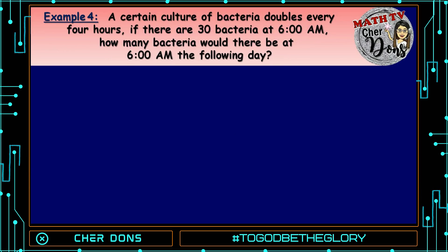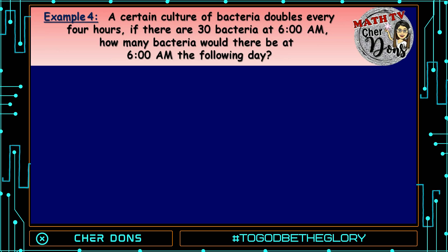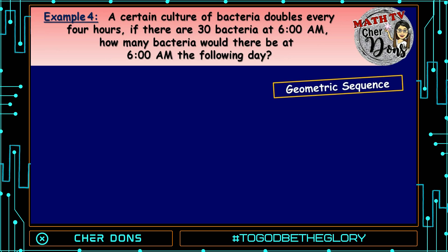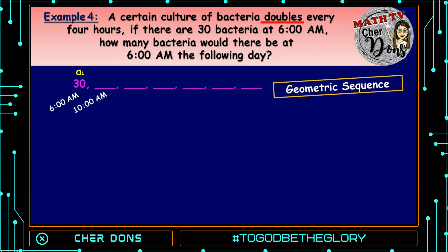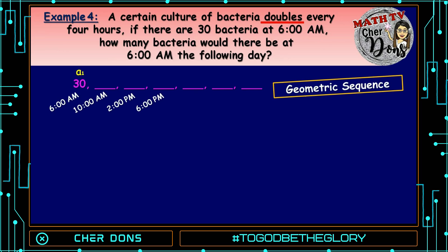Example number 4: a certain culture of bacteria doubles every 4 hours. If there are 30 bacteria at 6 a.m., how many bacteria would there be at 6 a.m. the following day? This is a geometric sequence, because of the word 'doubles' — the bacteria doubles every 4 hours. Let us form the sequence: starting with 30 at 6 a.m. as A sub 1. After 4 hours it becomes 10 a.m., then 2 p.m., then 6 p.m., and so on until we reach 6 a.m. the following day.